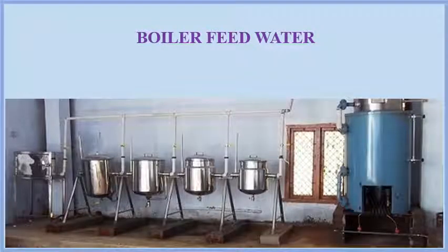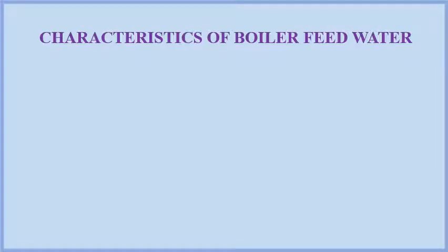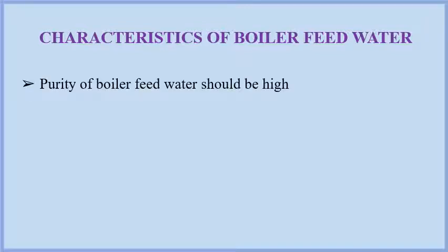What is boiler feed water? As you know, a boiler is a closed vessel in which water under pressure is transformed into steam by the application of heat. The steam so generated is used in industries for the generation of power. Boiler feed water can be defined as the water used to generate steam in a boiler. It is an essential part of boiler operations. This water is recirculated throughout the system and never comes in contact with the atmosphere. So the boiler feed water must be pure and should have specific characteristic properties.